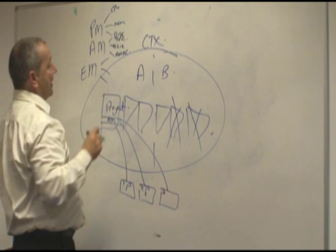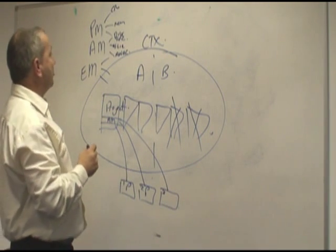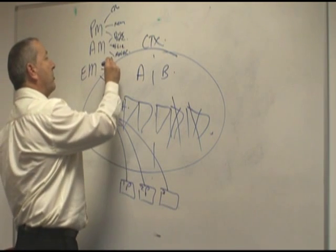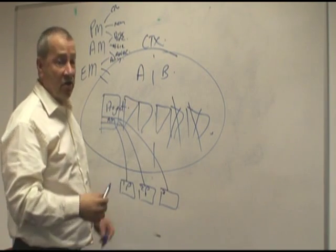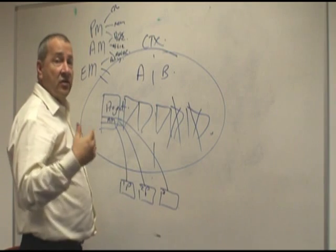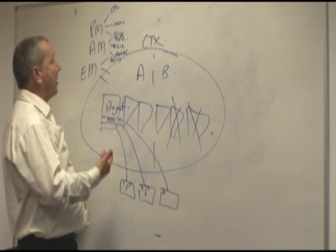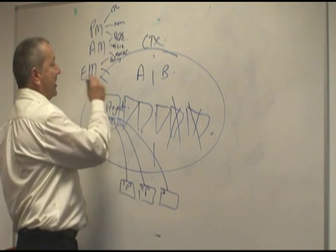That brings us to Environment Manager, which again has three parts of its role in the terminal server world. First one is what we call policy. And that's all about things like replacing login scripts, setting up your drives, setting up your printers, all that for the environment for the user in the middle.